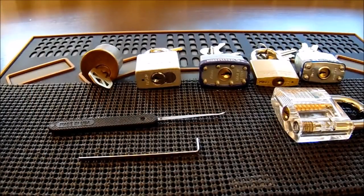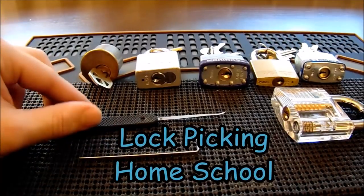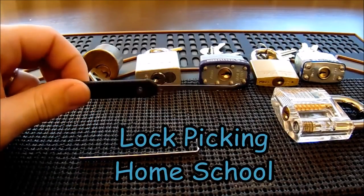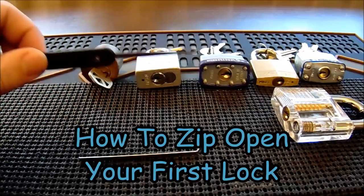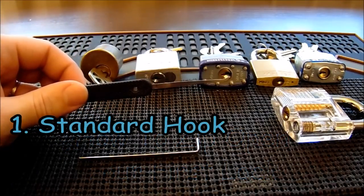This is the Helpful Lock Picker here, and welcome back to my lock picking homeschool series. The video I have for you today is on the zipping technique. What you need in order to do this is a standard hook or a half diamond and also a bottom of the keyway tensioner.